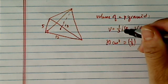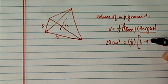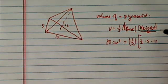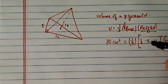So it's one-third times the area of the base. The area of the base is a triangle, it's half times 5 times 12, because this happened to be a right triangle, and then height is the variable here. And each one of them is centimeter.